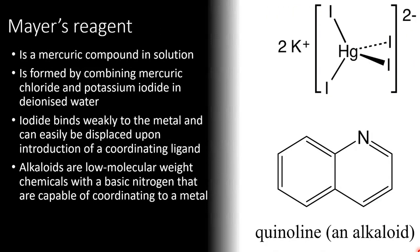Looking at its structure, Mayer's Reagent is a mercuric compound, meaning that it contains mercury in solution. It is made when mercuric chloride is combined with potassium iodide in deionized water. The iodide anions bind weakly to the metal, and these can be easily displaced upon the introduction of a coordinating ligand.